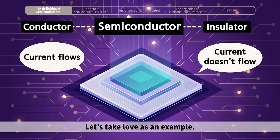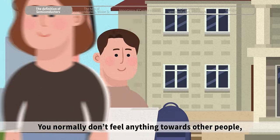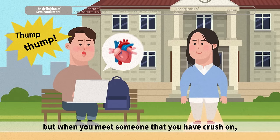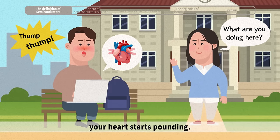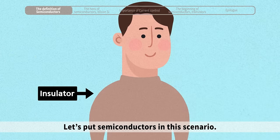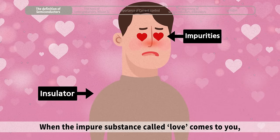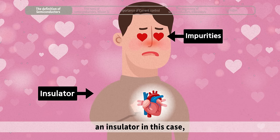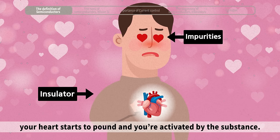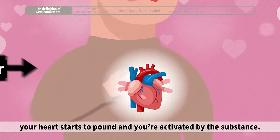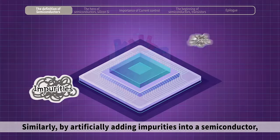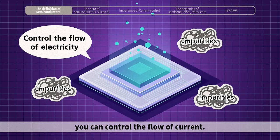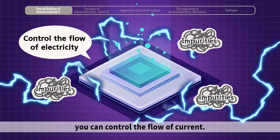Let's take love as an example. You normally don't feel anything towards other people, but when you meet someone that you have a crush on, your heart starts pounding. When the impure substance called love comes to you — an insulator in this case — your heart starts to pound and you're activated by the substance. Similarly, by artificially adding impurities into a semiconductor, you can control the flow of current.